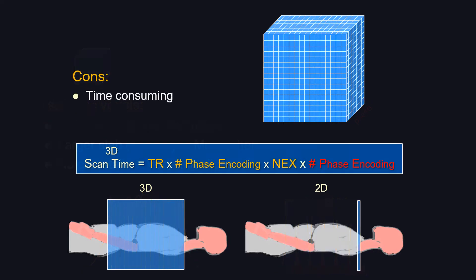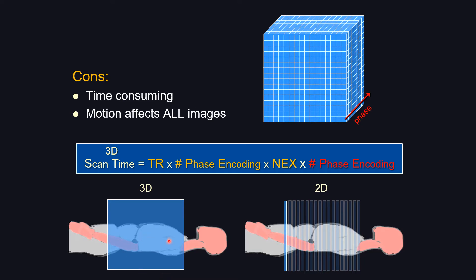What about the disadvantages? Because you're getting an additional phase encoding in the z-axis, and phase encoding is time-consuming, 3D is generally more time-consuming than 2D. In addition, you acquire one large volume at a time, so any patient motion throughout the imaging will affect the entire dataset. Whereas if you acquire one image slice at a time, some slices may be affected by motion but others may not. So if you have a problem with motion artifact, you may not want to do 3D imaging — when you later partition into thin slices, every single slice will be affected.